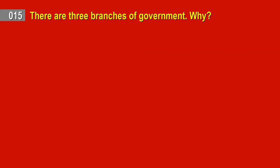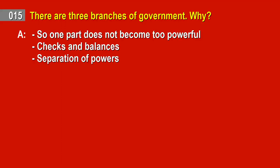Question 15. There are three branches of government. Why? Answer: So one part does not become too powerful. Checks and balances. Separation of powers.